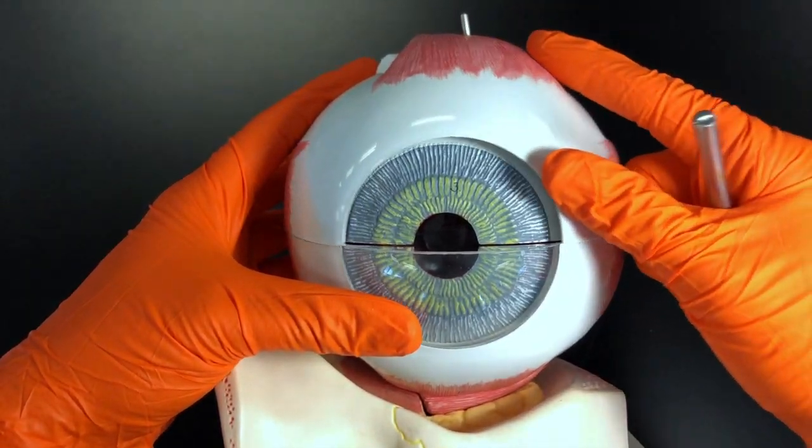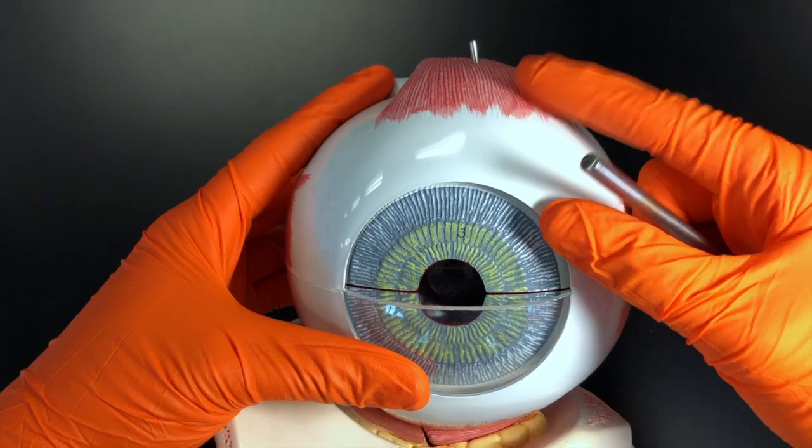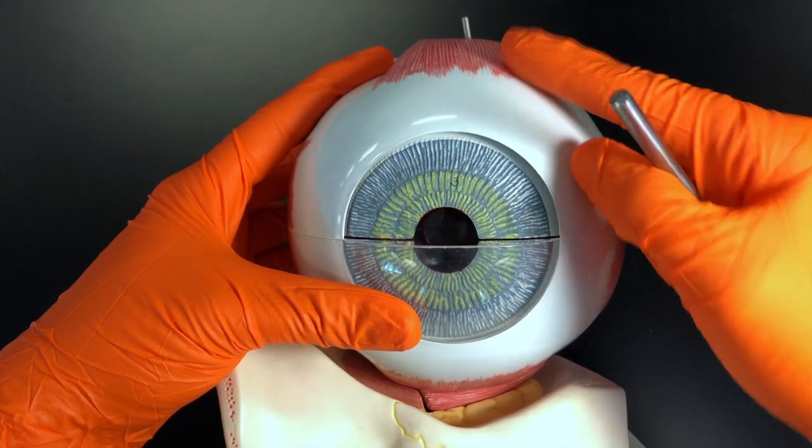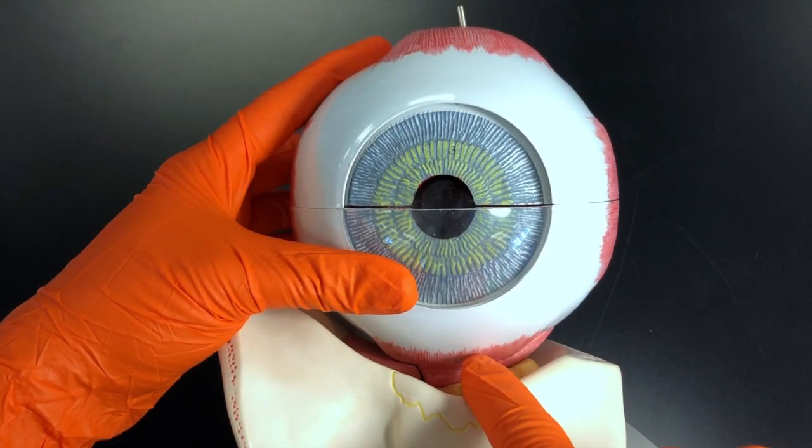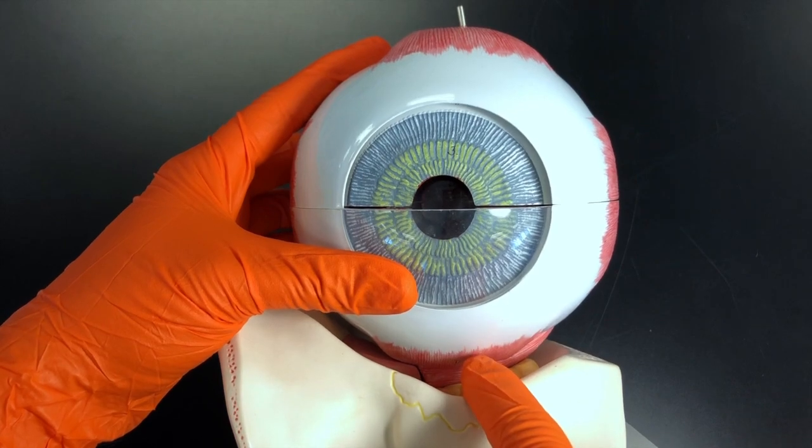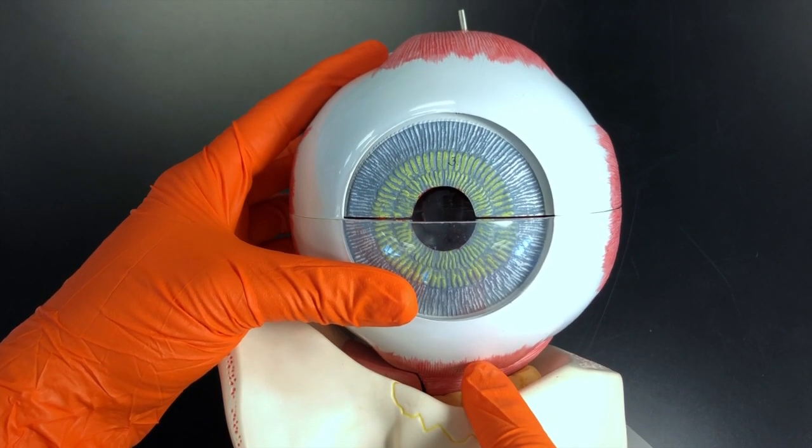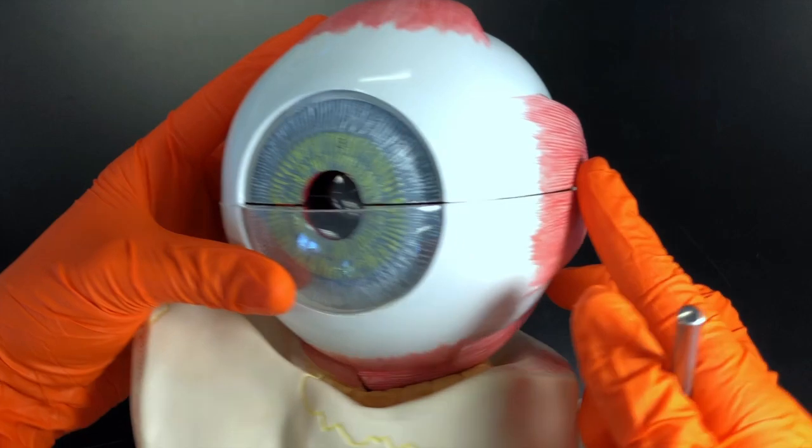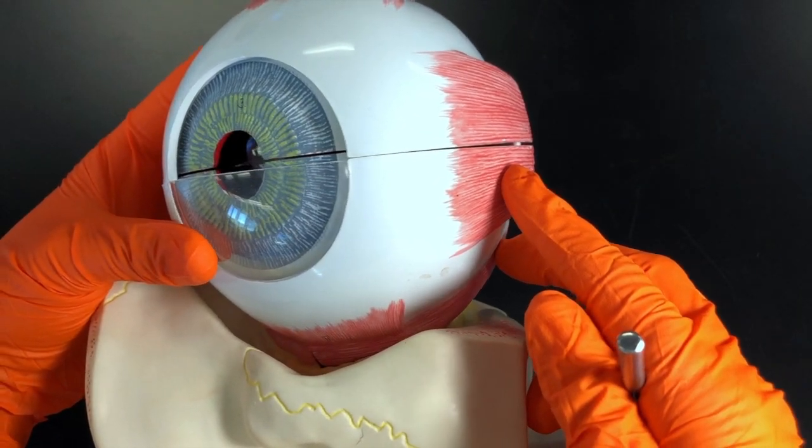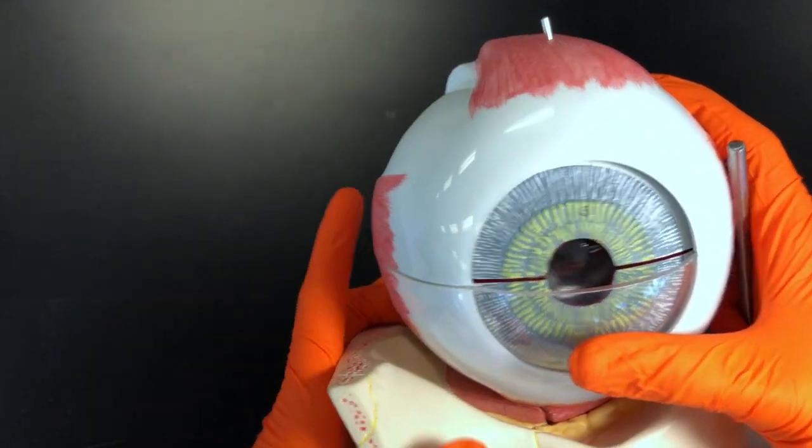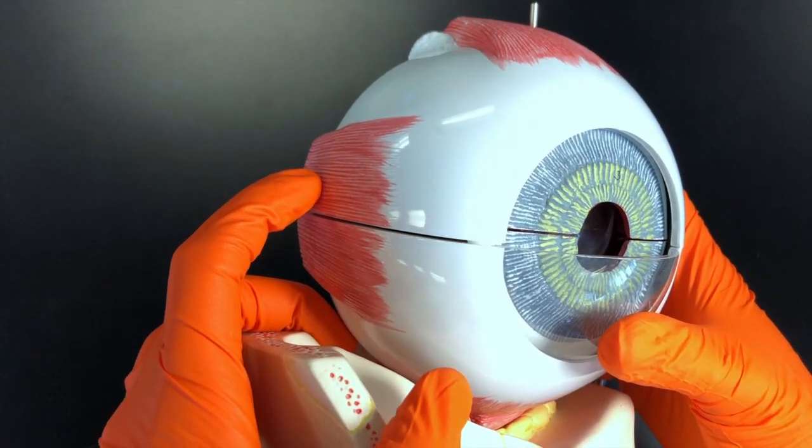This is the superior portion of the eye, therefore that is the superior rectus muscle. This is the inferior portion of the eye, so therefore that is the inferior rectus muscle. This would be the lateral rectus muscle, and this would be the medial rectus muscle.